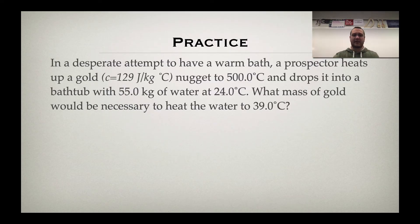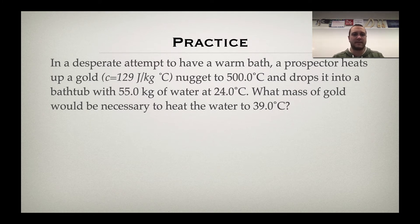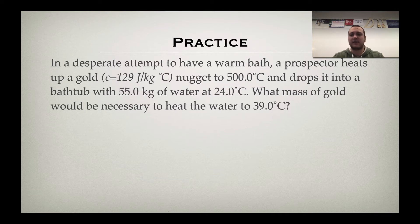So mathematically, here's an example. We have this prospector — we'll call him Prospector Pete because that just seems fitting. In a desperate attempt to have a nice warm bath, he heats up some gold, giving you the specific heat of 129 joules per kilogram degree Celsius. He's going to heat that nugget, likely over a nice wood fire given that he's a prospector, and he's going to heat that to 500 degrees Celsius. That is going to be a hot chunk of gold.